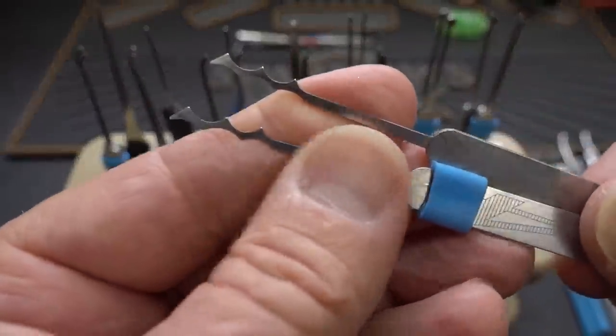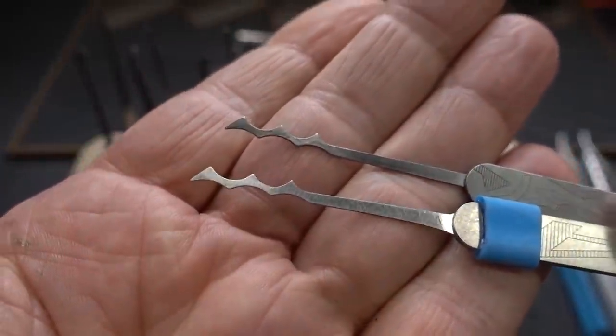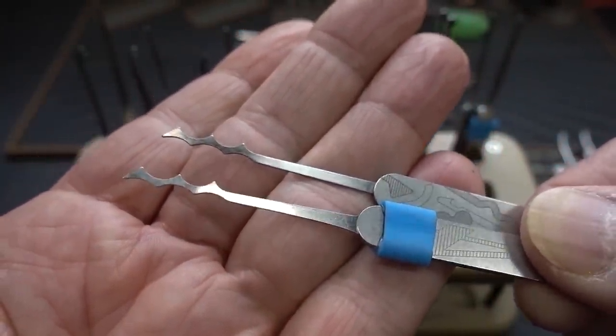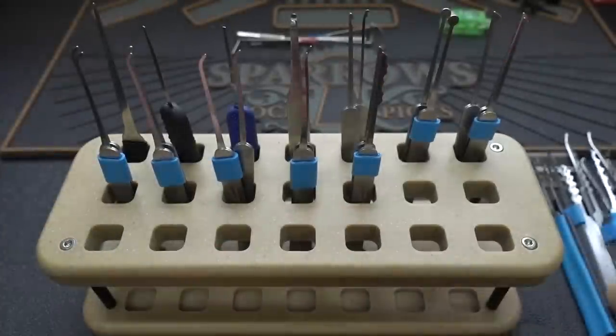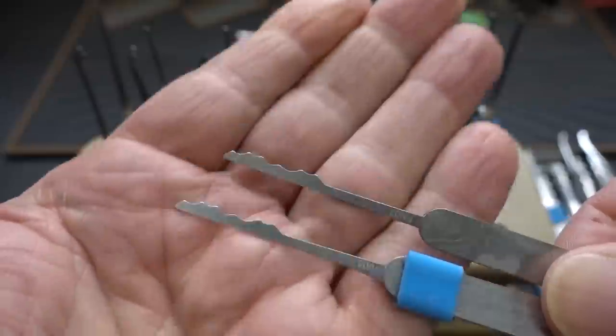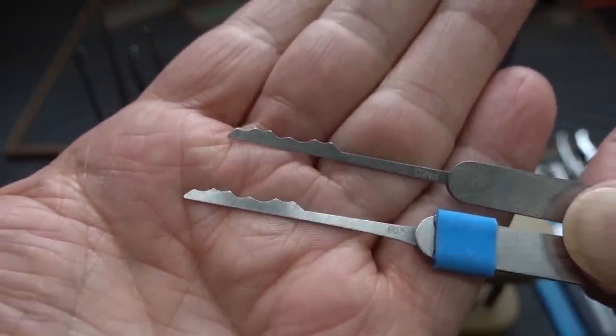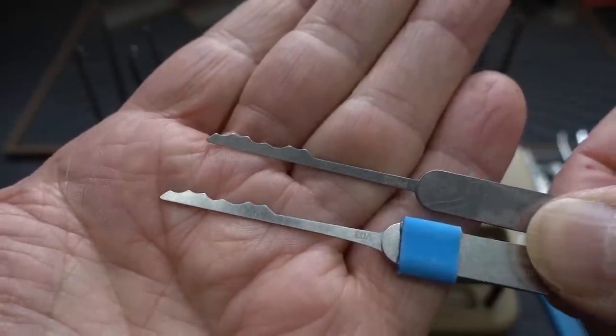I'm moving to the W rake. This is a kinetic weapon. These are both from Multipick. Next one, I love using these guys on master locks. This is the L rake or the city rake. One in each different thickness.